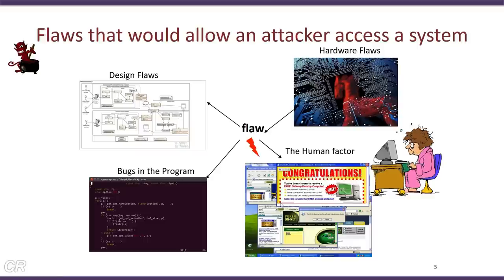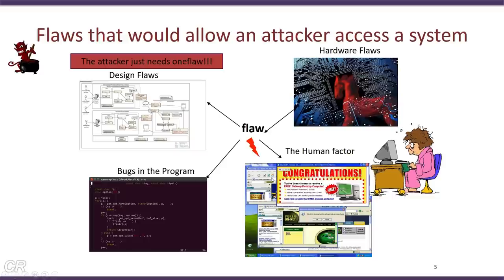So what we have seen are different types of flaws: design flaws, hardware flaws, bugs in the program, and the human factor. If an attacker wants to get access to your system, all that is required is just one single flaw. Any one of these is sufficient for the attacker to gain access and control your entire system or steal secret data.